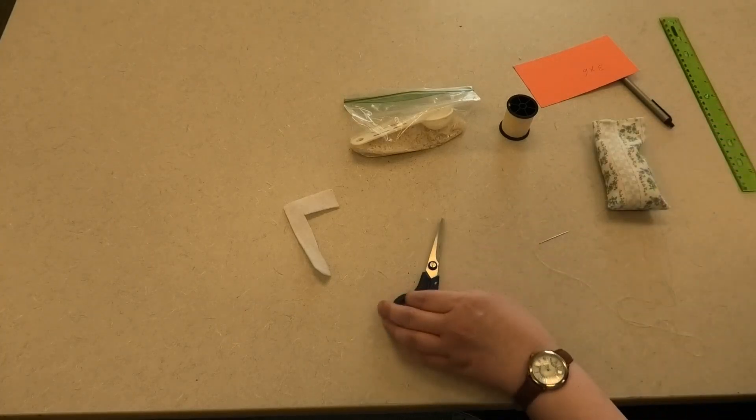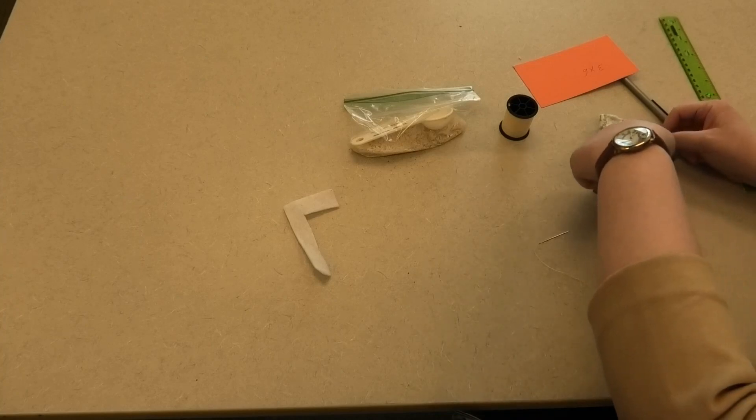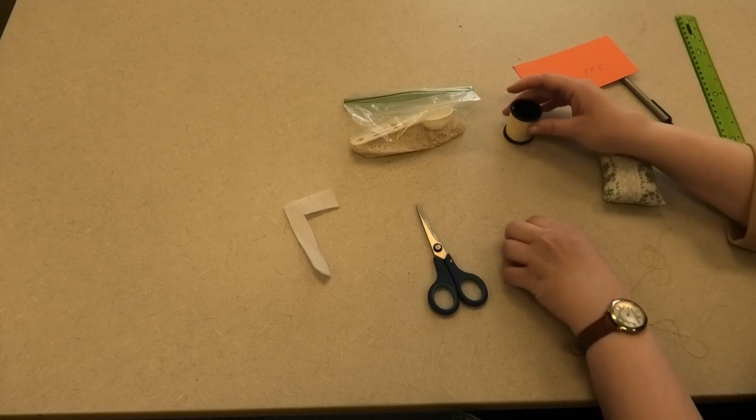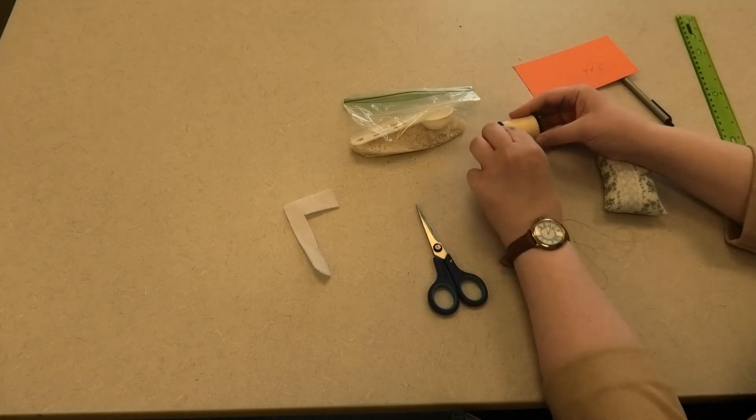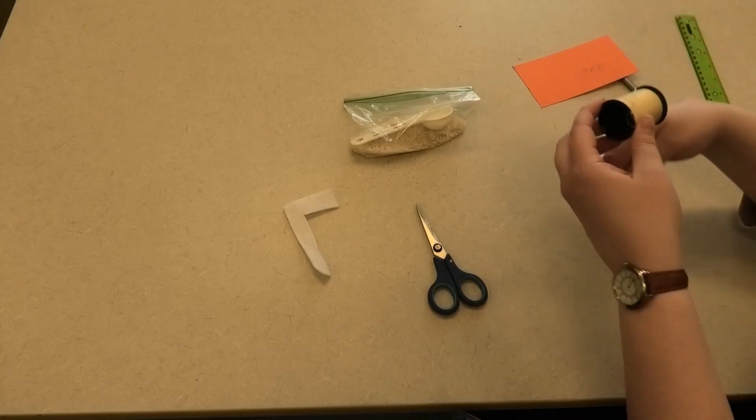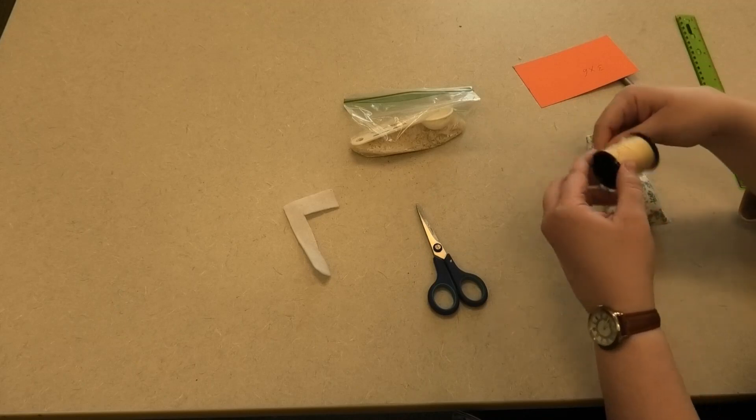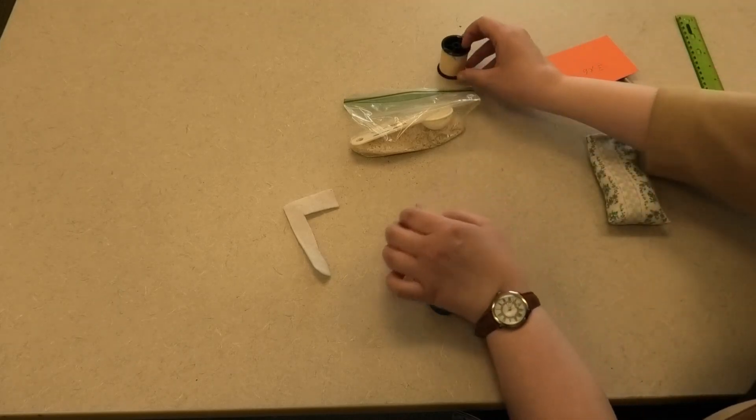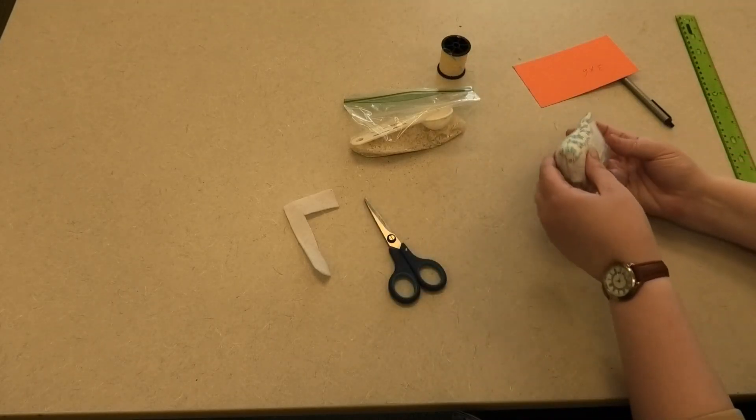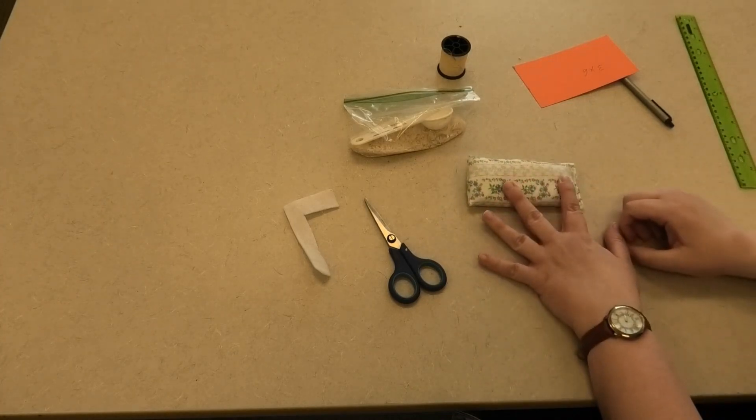Now that I've got this last side sewed up, I'm just going to trim off the thread. Stick my needle back into the thread for use on a later project, wrapping the extra round so it doesn't get tangled in anything. And there you go, my very own DIY rice bag.